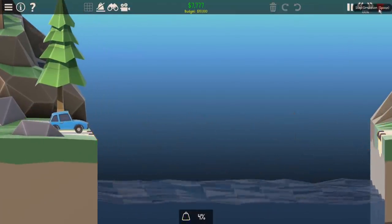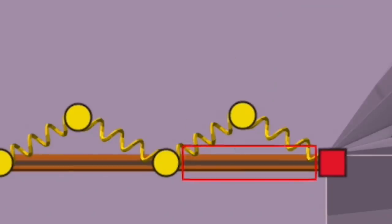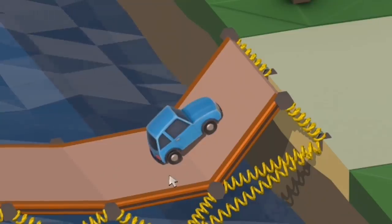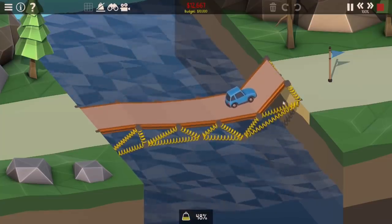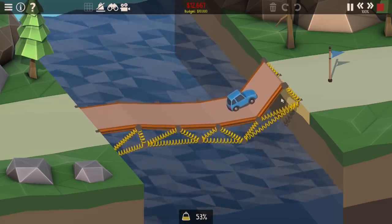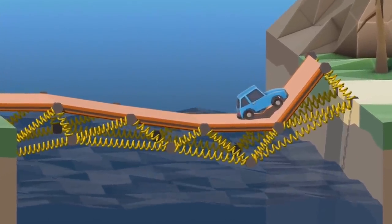And here we go. Right, let's turn the springs back down. 70% seems to be the magic number. Slowly but surely, I'm getting ever closer to an answer. The car can almost make it up and over. The budget is another story entirely. But I do have a bridge that's almost sitting flat in the middle.